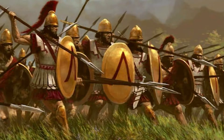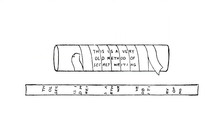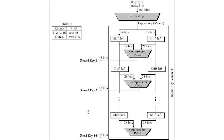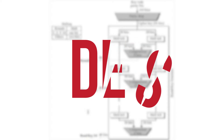The history of encryption actually goes all the way back to 600 BC, where the ancient Spartans used a device called a scytale to send secret messages during battle. Modern computer encryption began in the early 1970s when IBM formed a crypto group, and this group designed a block cipher to protect customers' data, which became known as the Data Encryption Standard or DES, until it was cracked in 1997.